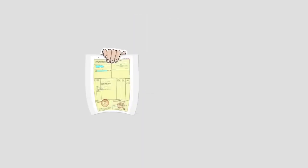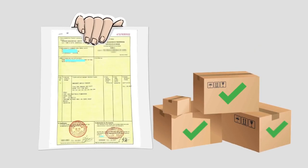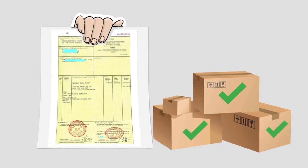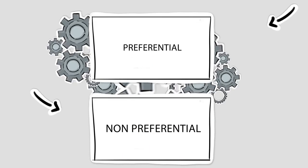Certificate of origin. To prove that a good satisfies the rules of origin, a document called Certificate of Origin (COO) is issued. They again are of two types: preferential and non-preferential.